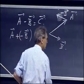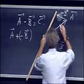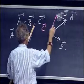And so this vector now here equals A minus B. This vector C is A minus B.